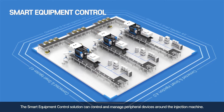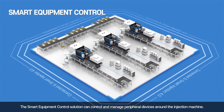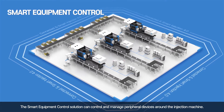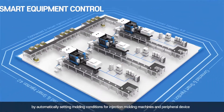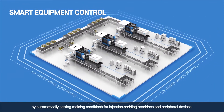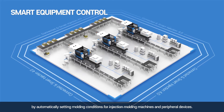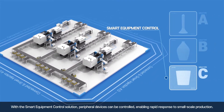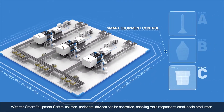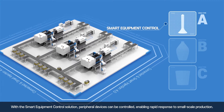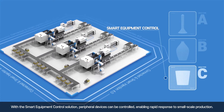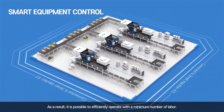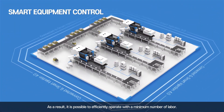The Smart Equipment Control solution can control and manage peripheral devices around the injection machine by automatically setting molding conditions for injection molding machines and peripheral devices. Peripheral devices can be controlled, enabling rapid response to small-scale production. As a result, it is possible to efficiently operate with a minimum number of labor.